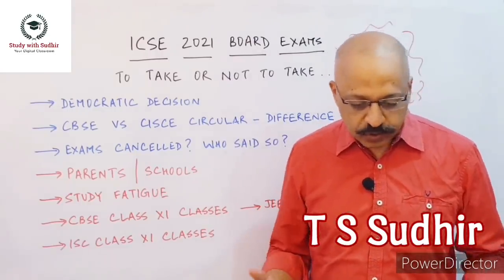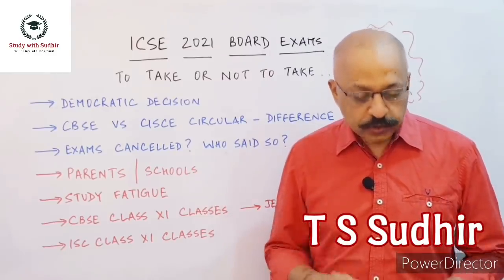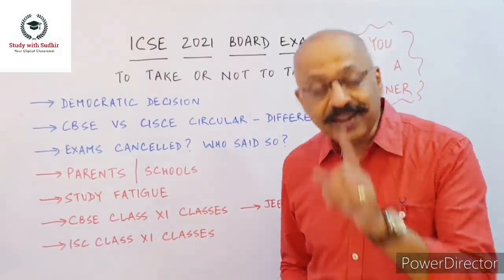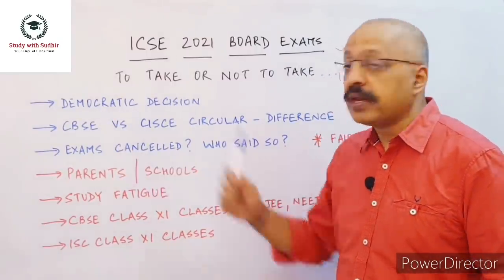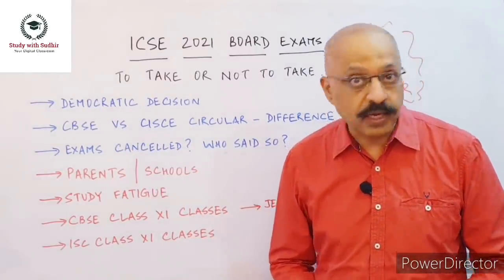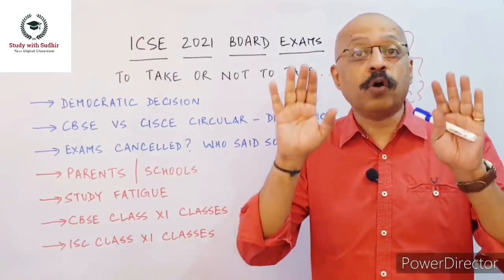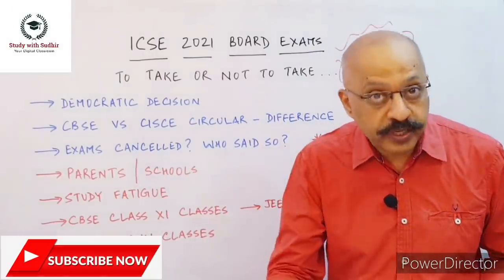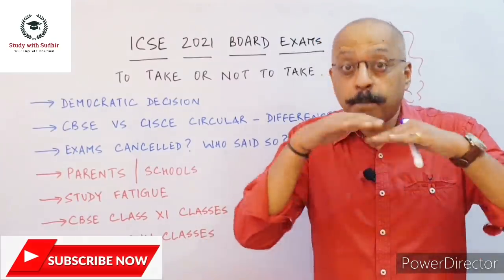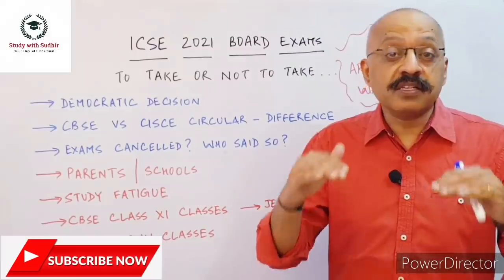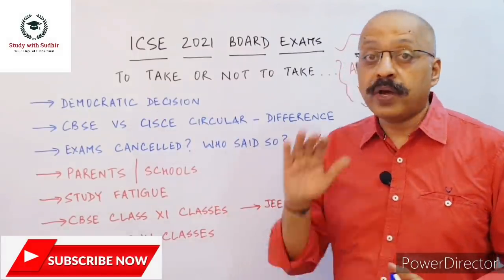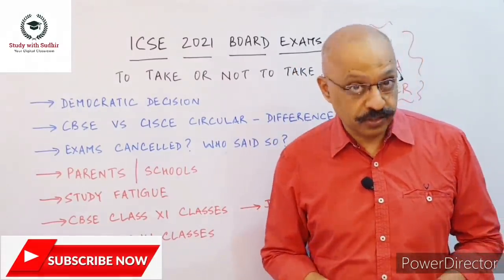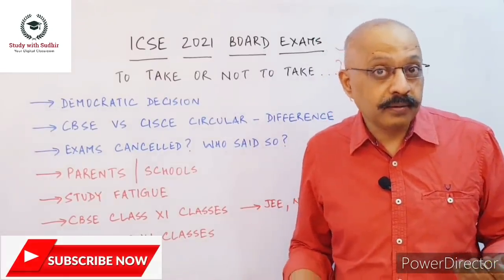A couple of students on the channel yesterday wrote — and I will quote one of them — 'I do not see what's wrong with this decision. If you want to take the examination you can; if you do not want to, you need not.' Yes, exactly the point I had made during the live session. It is a very democratic decision taken by the ICSC council. They have given the right to the students to decide whether they want to take the examination or not. So on paper — and I repeat, on paper — this is a perfectly democratic decision wherein they are not imposing their will on the students but letting the students decide. Then why am I a little upset about this entire thing?